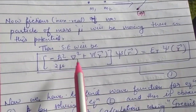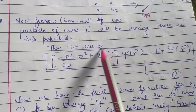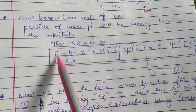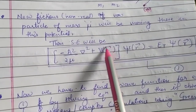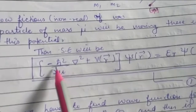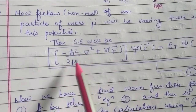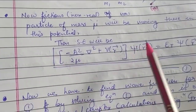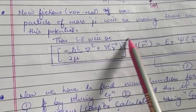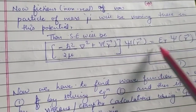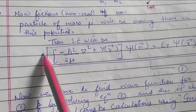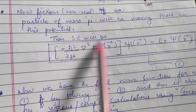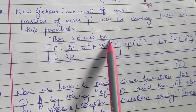The Schrödinger equation for the fictitious particle of mass μ moving in potential V(r) becomes: [−ℏ²/(2μ) ∇² + V(r)] ψ(r) = E_total ψ(r). This is equation number one. This was our step one — writing the Schrödinger equation for our system.